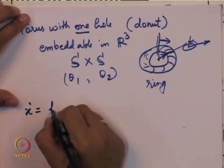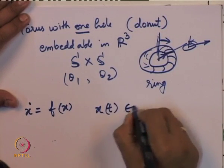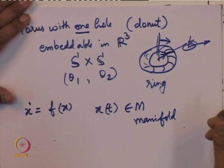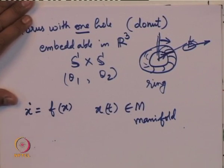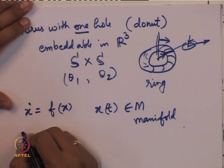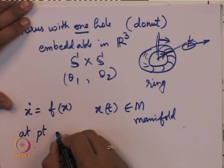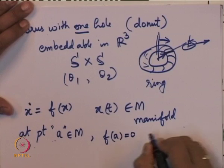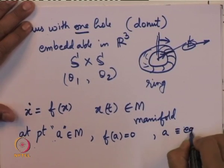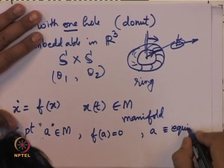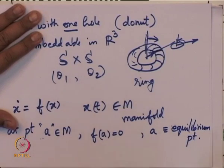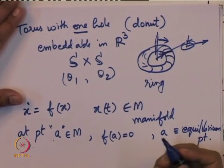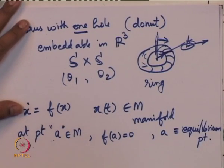Given a dynamical system ẋ = f(x) in which x(t) evolves on a manifold — and in this course we deal only with smooth manifolds, what we defined as regular manifolds — if at point A on the manifold M we have f(A) = 0, then we say A is an equilibrium point. If f(A) = 0, the rate of change of x is 0, so x remains at that point.